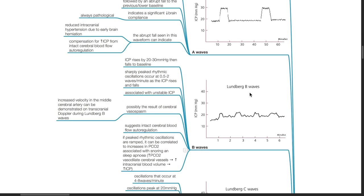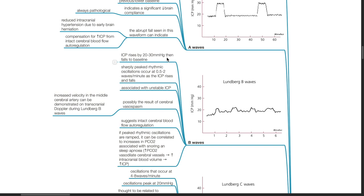Lundberg B waves. ICP rises by 20 to 30 mmHg then falls to baseline. Sharply peak rhythmic oscillations occur at 0.5 to 2 waves per minute as the ICP rises and falls. This is associated with an unstable ICP and is possibly the result of cerebral vessel spasm. Increased velocity in the middle cerebral artery can be demonstrated on transcranial Doppler during Lundberg B waves. Lundberg B waves suggest intact cerebral blood flow autoregulation. If peak rhythmic oscillations are ramped, it can be correlated to increases in PCO2 associated with snoring in sleep apnea. Increased PCO2 vasodilates cerebral blood vessels resulting in increased intracranial blood volume and increased ICP.